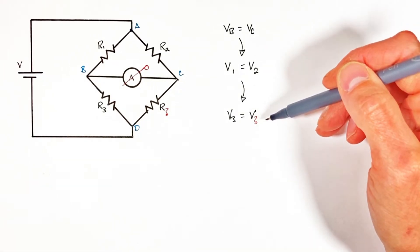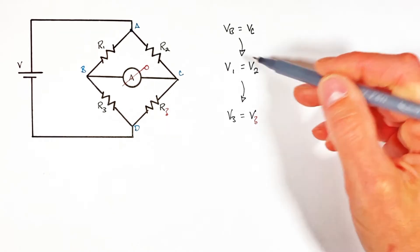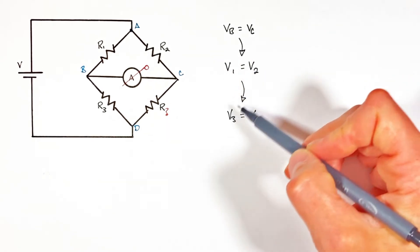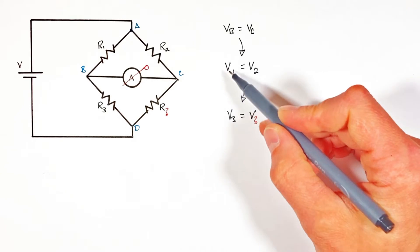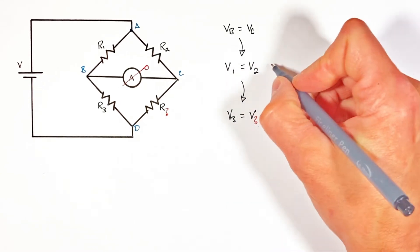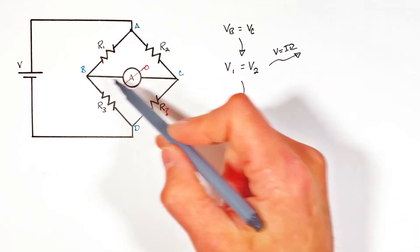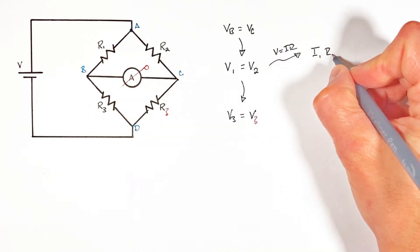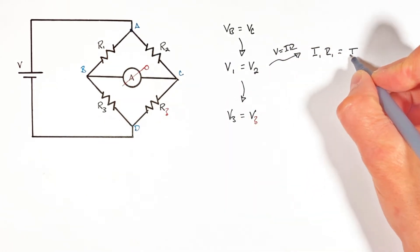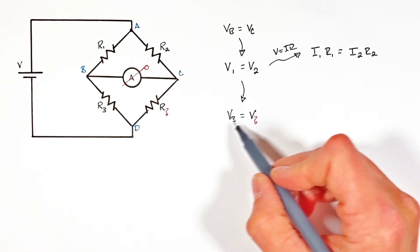And you'll notice all we're doing is setting up a system of equations here. So now we're going to apply Ohm's law to each of these resistors in order to expand out these equalities. So applying Ohm's law to resistor one and then resistor two, and doing the same thing down here.